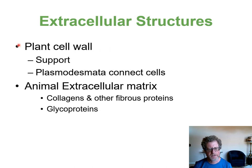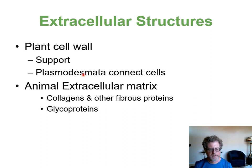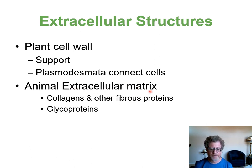Outside of plant cells, the cell wall supports the plant cell, and connections between different plant cells called plasmodesmata allow material to move between cells through tunnels. Animal cells don't have cell walls, but we have material outside the cell called the extracellular matrix, made of collagen and other proteins as well as carbohydrates, which supports and sticks cells together.